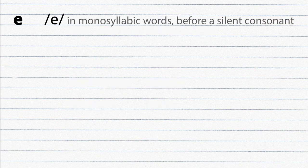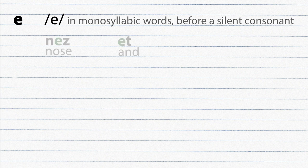In the words that contain only one syllable, or before a silent consonant, letter E is pronounced as E. Ne, et.